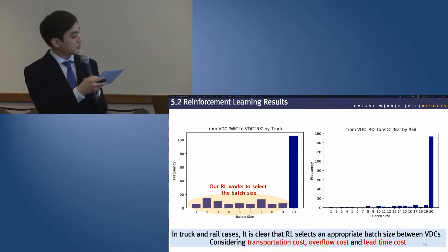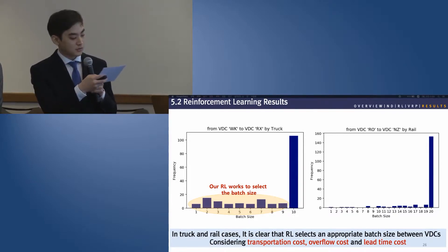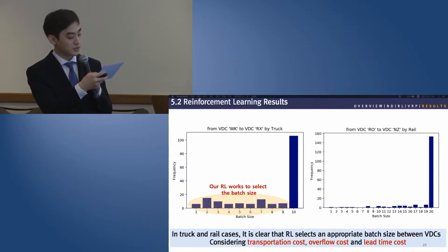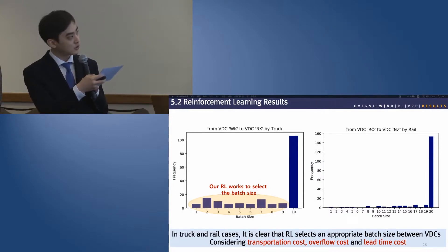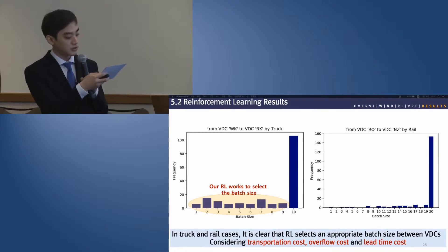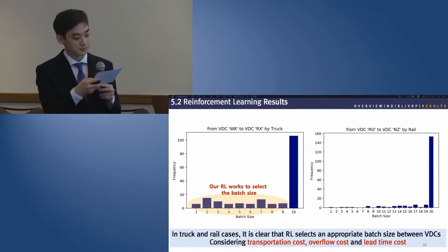Here is the result of our RL model. This bar chart shows how our RL model determined the batch size to ship vehicles by truck and rail. Full load is the most common in both bar charts, as it is the most cost-effective way to save transportation costs. But sometimes the RL model takes a small batch size, considering lead time and overflow costs in the long term.